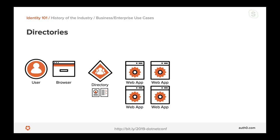The industry reacted by creating what is known as a directory — and since this is a .NET conference, we're all probably familiar with Active Directory. A directory is a centralized repository that performs credentials management and digital identity storage. Directories centralize this functionality in one place. The user only needs to authenticate once with one central entity and will be signed in automatically to all required applications — convenient for users, cost-saving for applications, and a smaller security surface overall. Administrators have one central place to provision users.